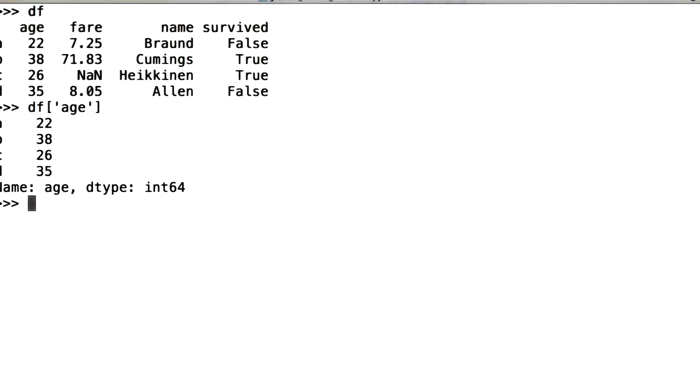And we can call in specific rows by calling a data frame object's loc method and passing the row index as an argument. For example, df.loc a.